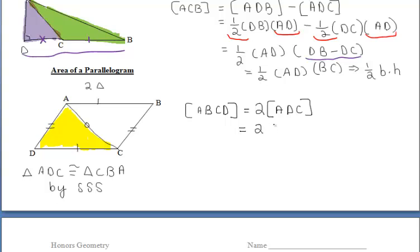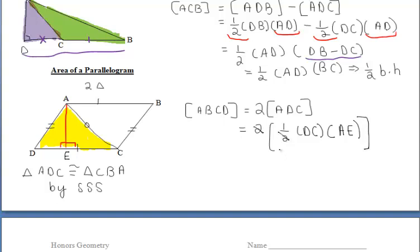I'm just going to work with the yellow triangle here. Two times the yellow triangle gives us the area of the parallelogram. We do one half base times height — the base of our yellow triangle is DC, and I drew in the altitude for the height, which is AE. Notice we're doing two times one half, which reduces to one. So we're left with DC times AE for the area of the parallelogram. DC is the base of the parallelogram and AE is the height, and they form right angles.